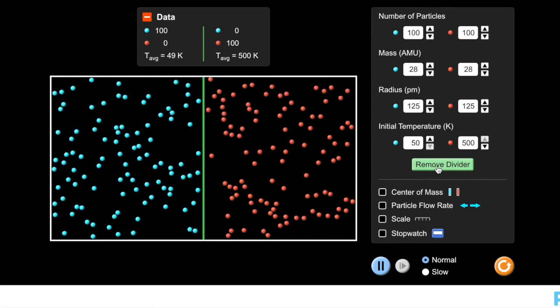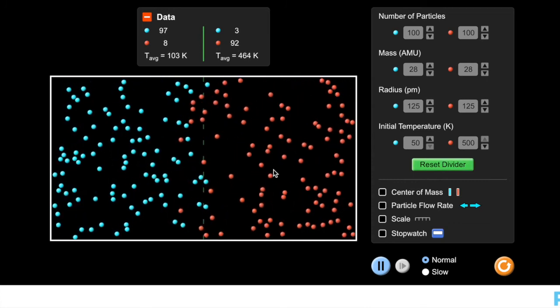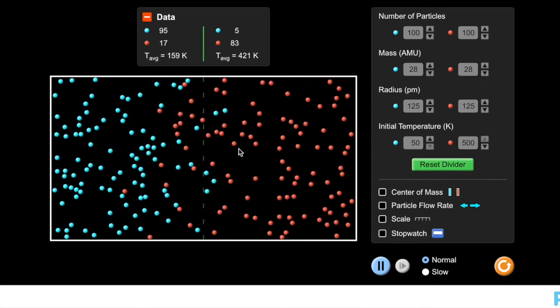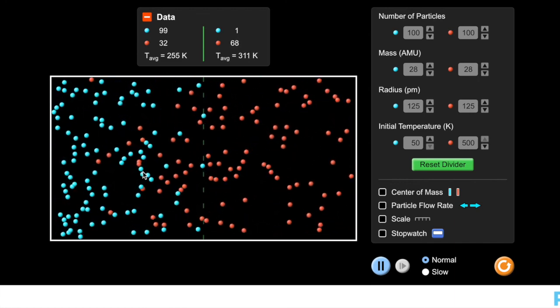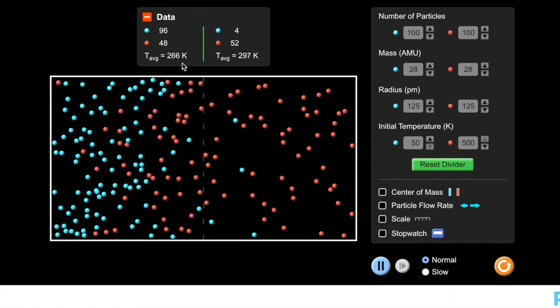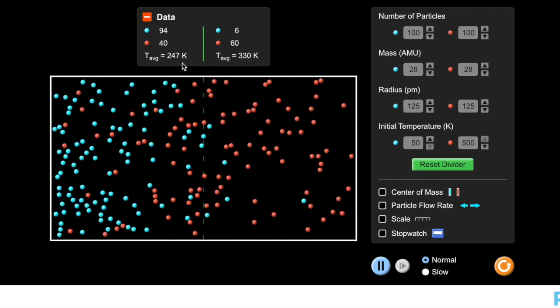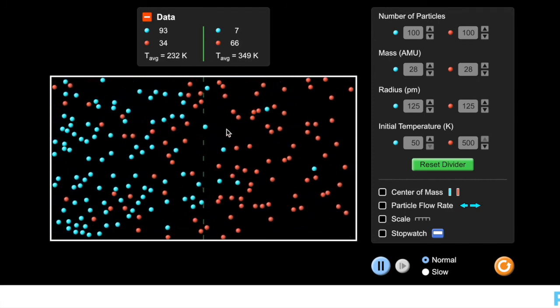So the divider has been removed. And I still have my red molecules moving to the left a lot faster than my blues move to the right. But my temperatures get really close to even really quickly.